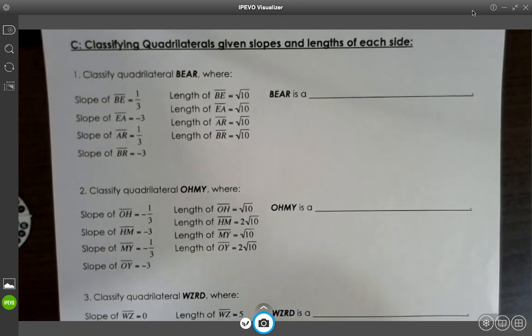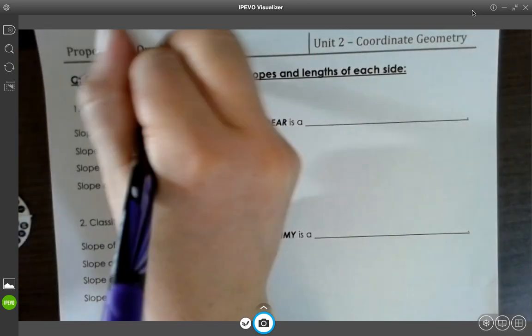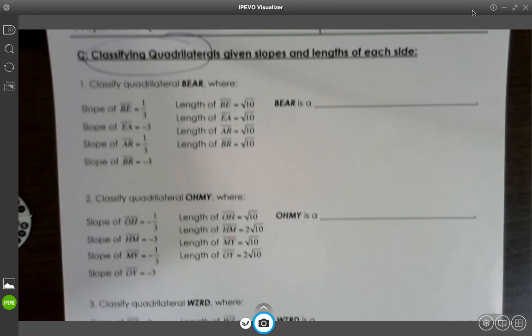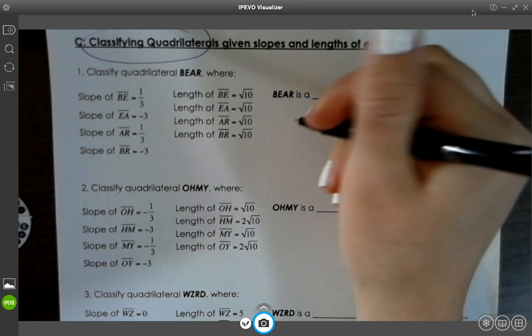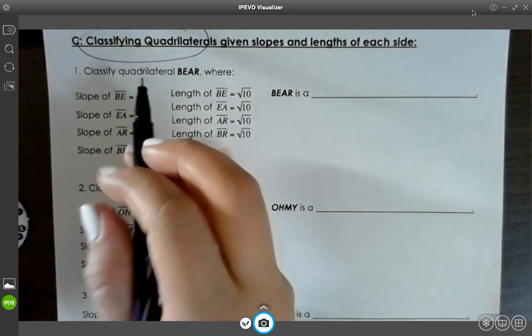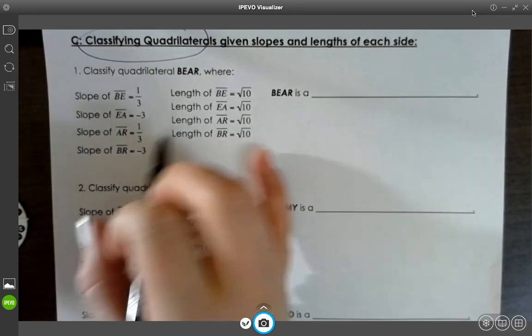Hi class, it's Ms. Gilbert. Now we are going to try classifying quadrilaterals. So I'm going to draw a quadrilateral. I'm going to try to see, look at these slopes and the lengths.